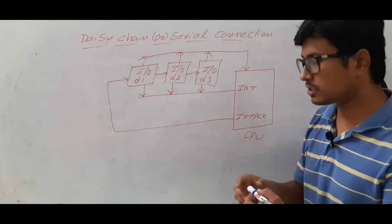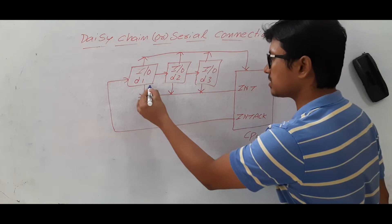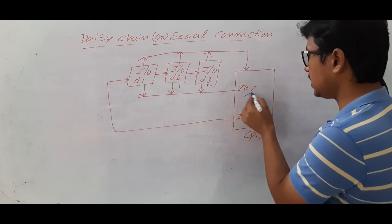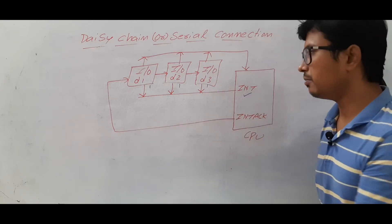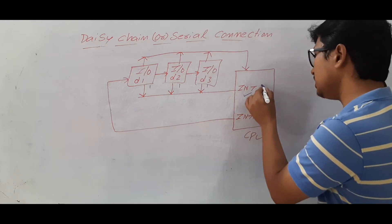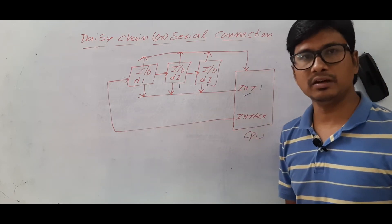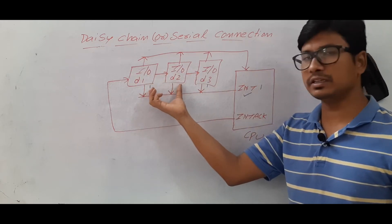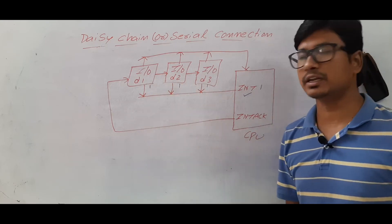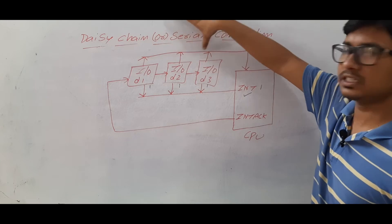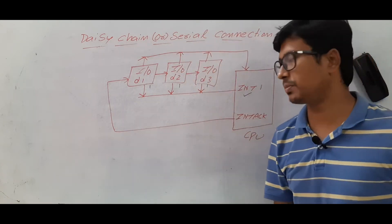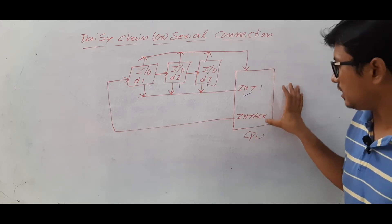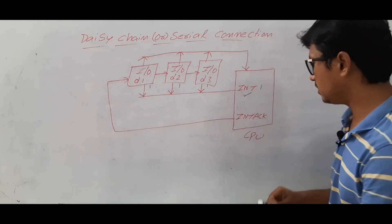Let's take a simple example. All three devices have given an interrupt request to the CPU. If an interrupt request is given by anyone — or in this case, by everyone — the interrupt signal will be enabled. Any IO device can give an interrupt. In my example, all IO devices have given an interrupt. This is the highest priority device, then next, then next — IO device three has the least priority. Once the CPU receives the interrupt, it will send the interrupt acknowledgement.